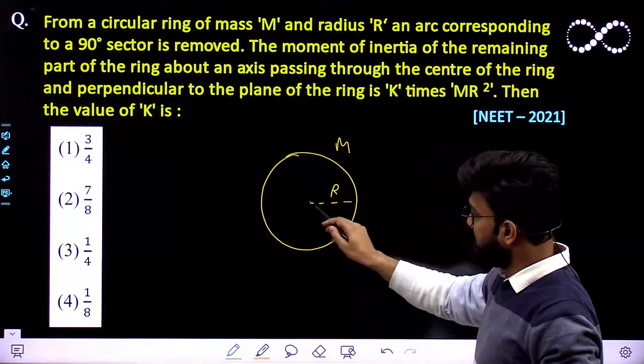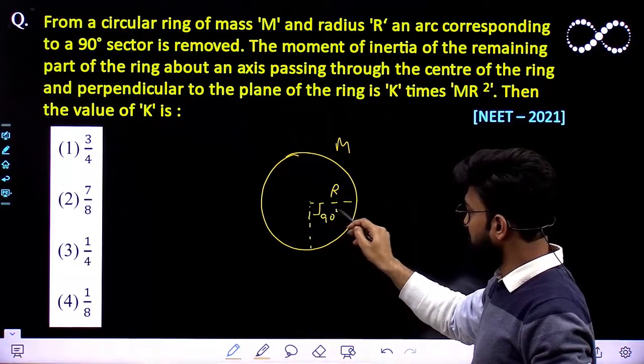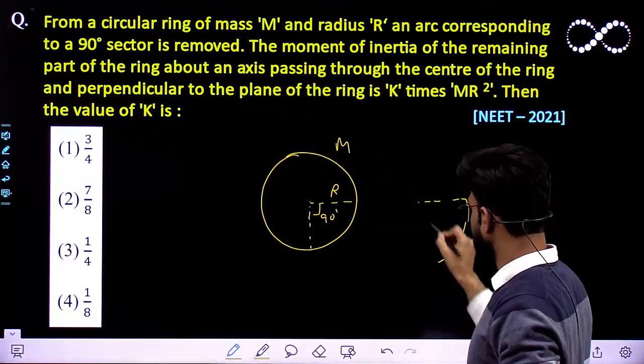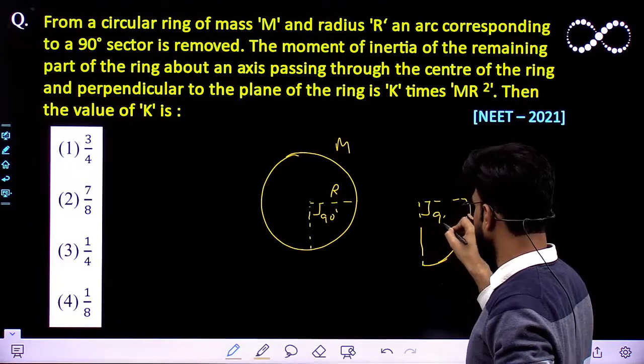In which from this ring, this 90 degree portion, this much of arc has been removed. You will be having this much of arc removed.